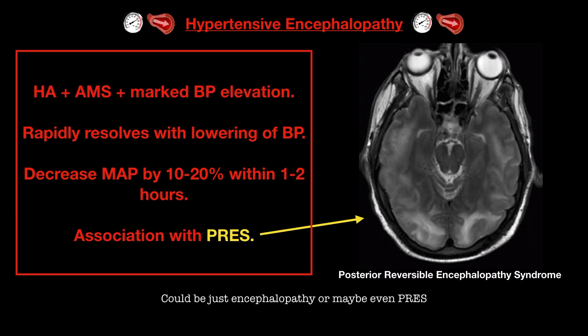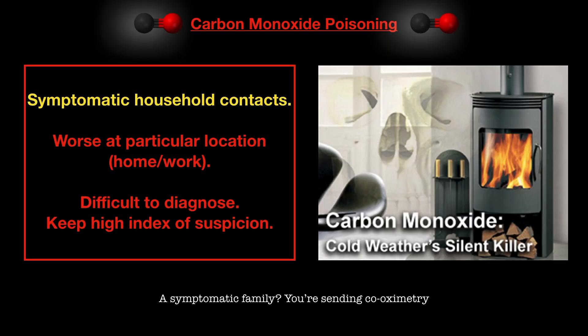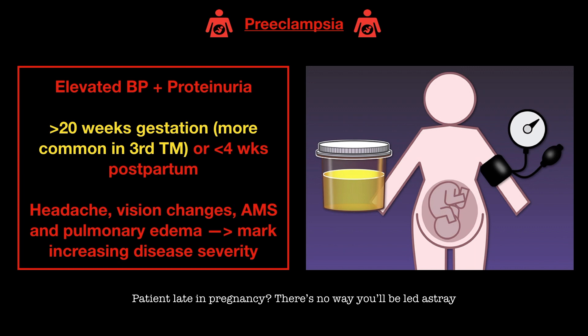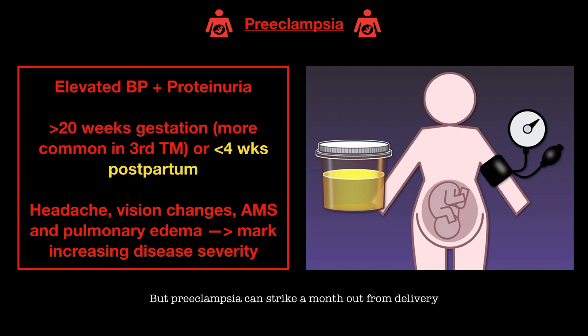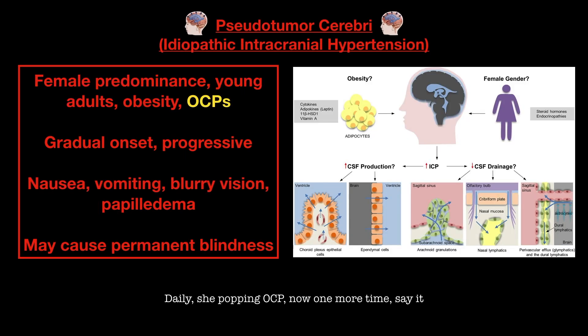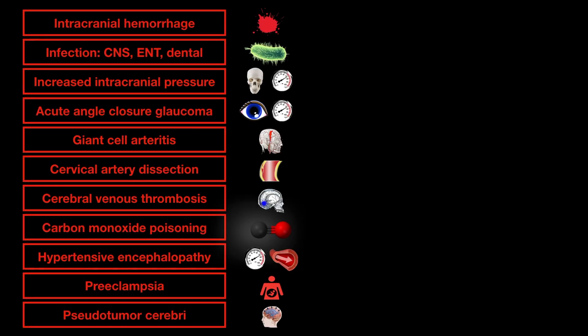Hypertensive headache with altered status — yeah, this patient is a mess. Could be just encephalopathy or maybe even preeclampsia. Symptomatic? Send co-oximetry. The story isn't classic? Whatever, just send it anyway. Patient late in pregnancy — there's no way you'll be led astray, but preeclampsia can strike a month out from delivery. Finally, a two-month postpartum lady with obesity, daily popping OCP — think pseudotumor cerebri.